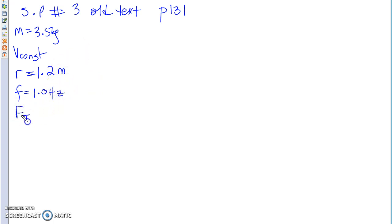All right, so we're going to take a look at three different questions today. One with, so this is sample problem number three from the old textbook, page 131. And this was a question where you had a steel ball, 3.5 kilograms, that is being swung in a vertical plane at the end of a rigid steel rod at a constant velocity, so V constant, and a radius of 1.2 meters. It has a frequency of 1.0 hertz. And the question was to calculate the tension at the top and the tension at the bottom.